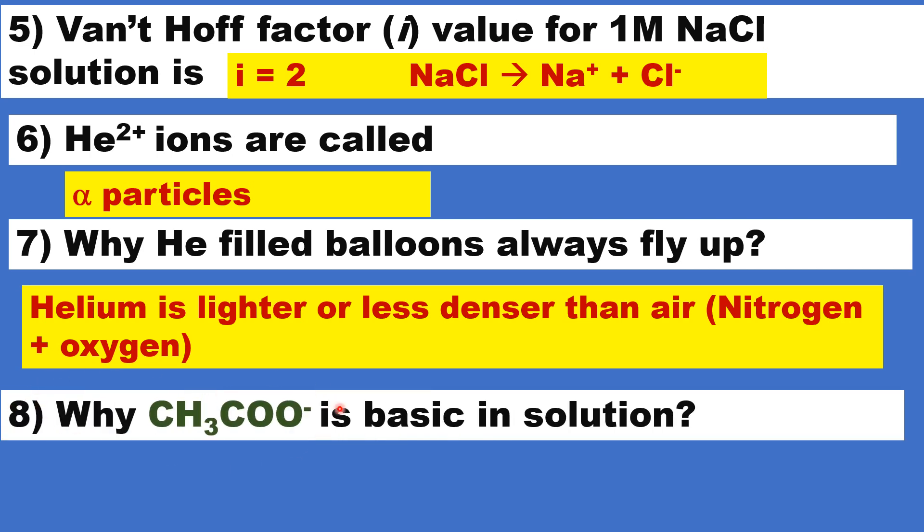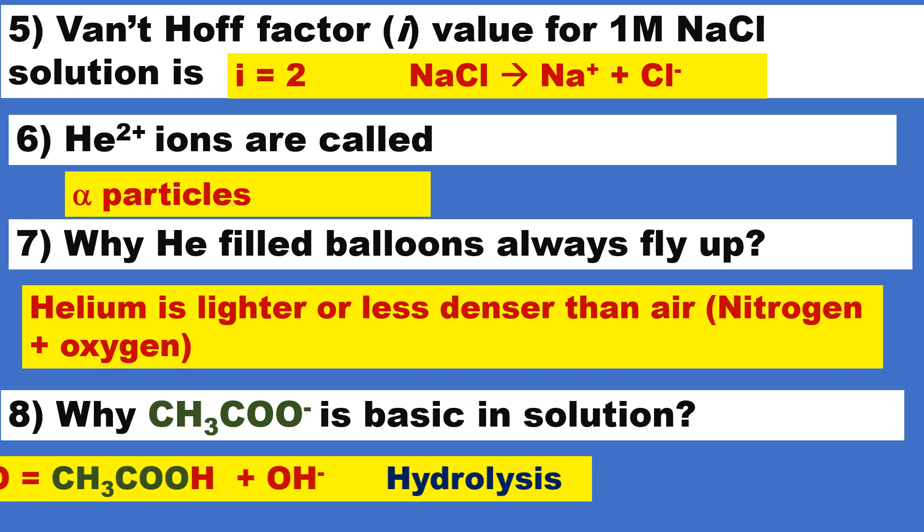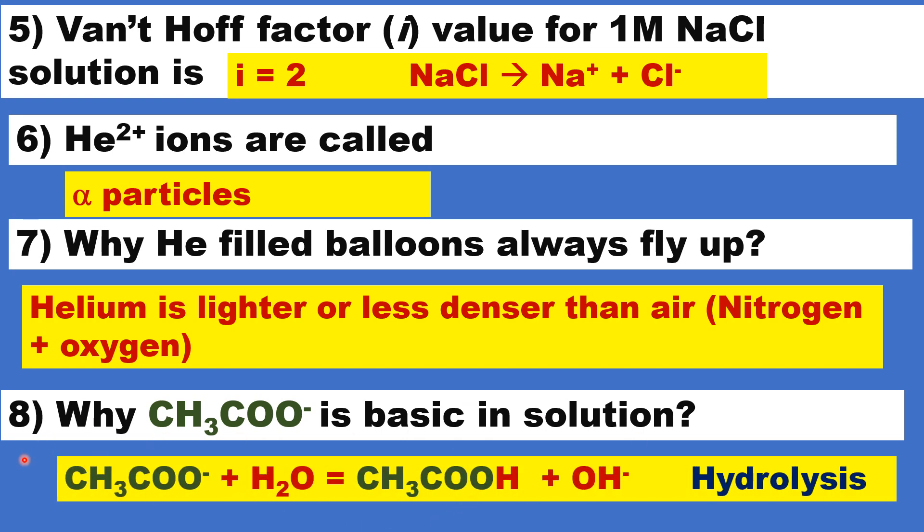Why acetate is basic in solution? Why acetate solution is basic? This is because of this hydrolysis reaction. The acetate ion in sodium acetate interacts with the water, reacts with the water to give CH3COOH. Hydrolysis means hydrolysis cleavage, HOH. H is taken by acetate ion.